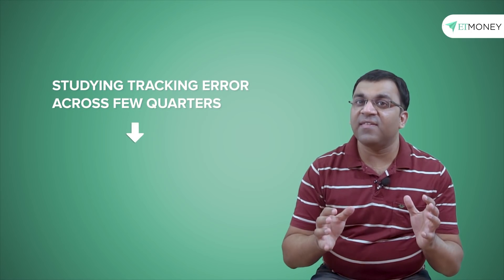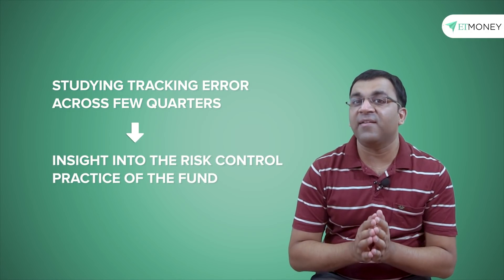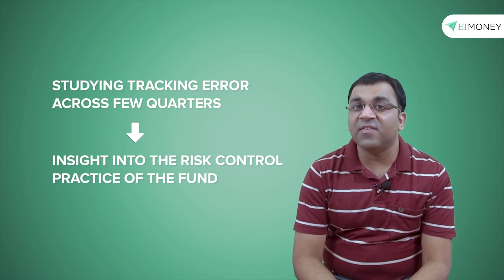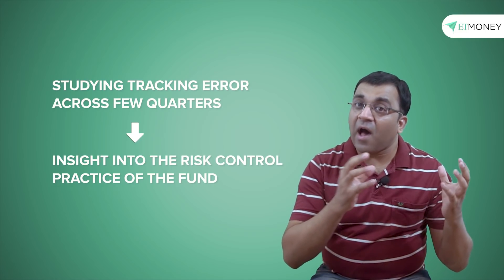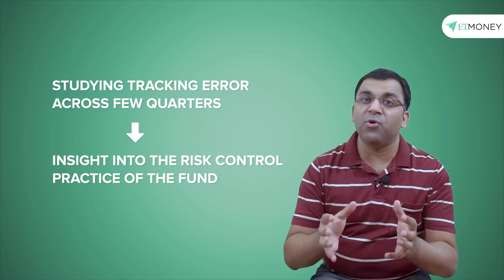In fact, instead of looking at just the present number, investors should look to study the tracking error across a few quarters, which will give a great signal into the risk control practices of the fund and help understand if the scheme might be taking unwarranted risks, buying stocks out of the weightage, or holding on to more cash. Which means if the tracking errors are high, then the purpose of index itself might come into question and it is something that investors need to be wary of.